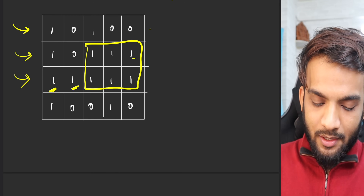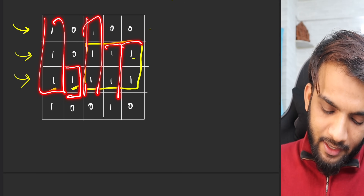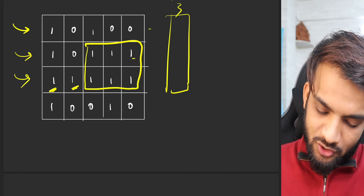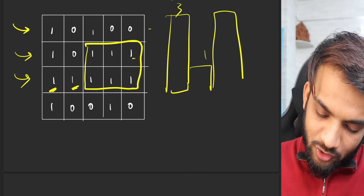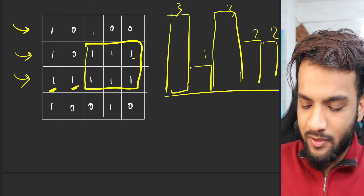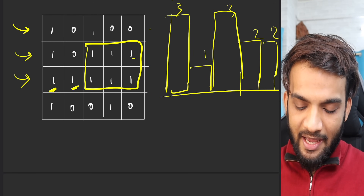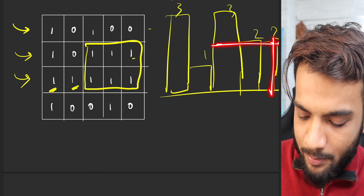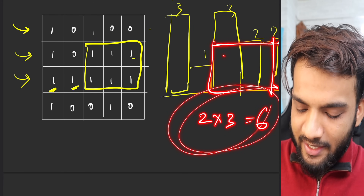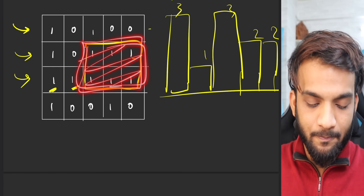Moving to the next row, I now have a histogram of heights 3, 1, 3, 2, 2. These form histograms again, and I can find the largest rectangle. This time the largest rectangle is two by three, which is six. So I get six from here — and that was our expected answer.